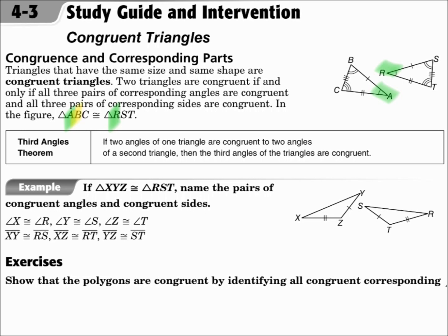B is second — B is the double arc angle and S is the double arc angle on the other one, so S is second in the second triangle. C is last — C is the triple arc and T is the triple arc in the other one, so T is last. Make sure you match up the angles properly.